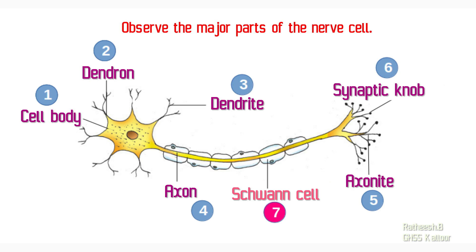Observe this illustration. Can you tabulate the main parts of a neuron? The main parts of a neuron are: cell body, dendron, dendrite, axon, axonite, synaptic node, and Schwann cell. You can easily identify the main parts of a neuron through this picture.